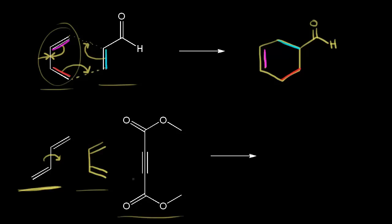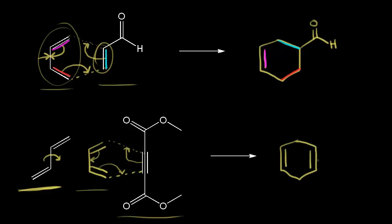Now we're ready for the reaction. We move these six pi electrons: first into here to form a bond between these two carbons. Notice this time we're dealing with a triple bond — alkynes can act as dienophiles too. We take these pi electrons and move them in to form a bond between these two carbons, then move these electrons in here. Our product has two double bonds in the ring, and we have the ester group coming off this carbon, and the same ester group on the other side.